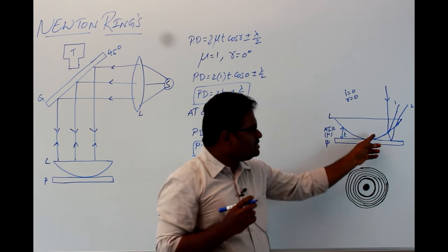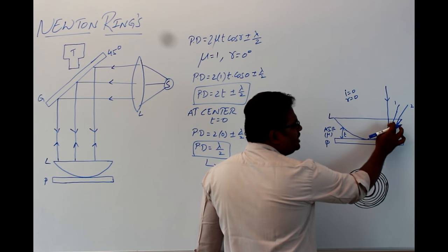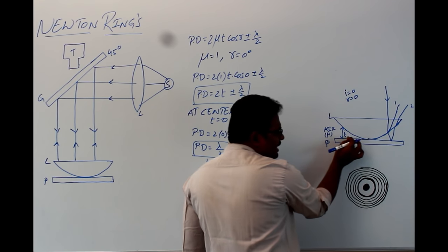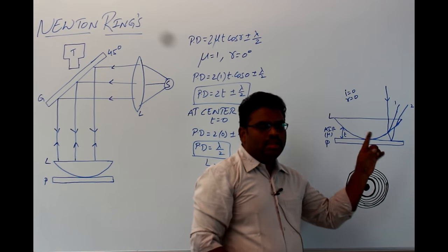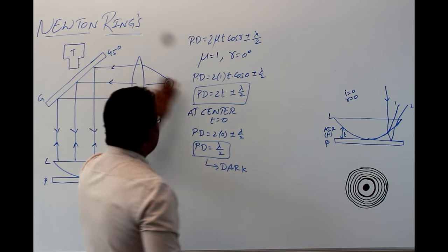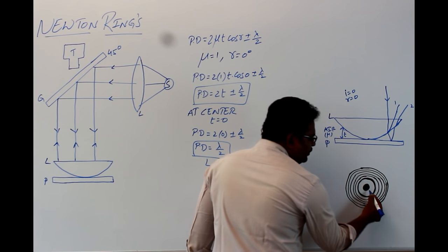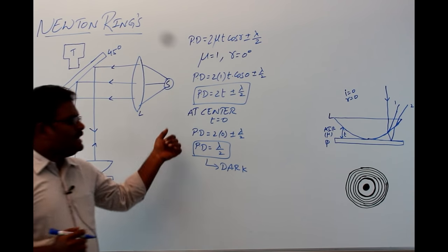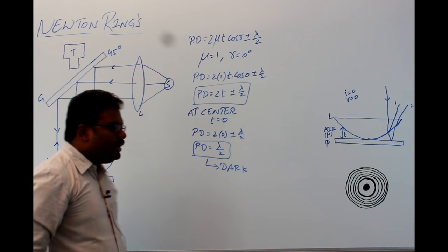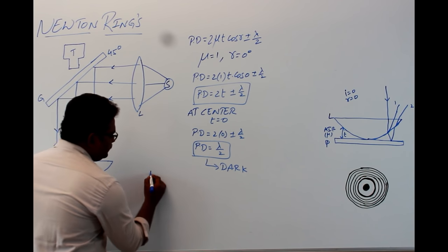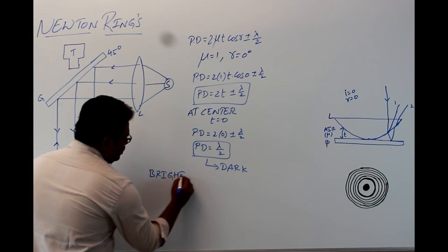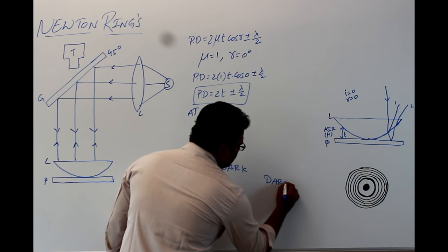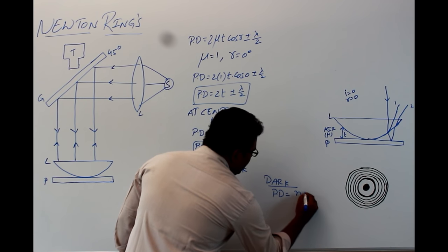We get alternating bright and dark rings because at a particular distance, if the two light rays superimpose with path difference n lambda, you see a bright fringe. The condition for bright fringe is path difference = n lambda, and for dark fringe is path difference = (n + 1/2)lambda.